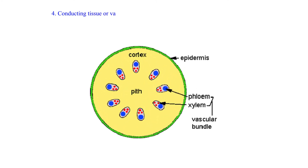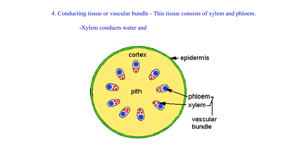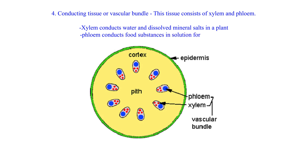4. Conducting Tissue or Vascular Bundle: This tissue consists of xylem and phloem. Xylem conducts water and dissolved mineral salts in a plant. Phloem conducts food substances in solution form in plants.